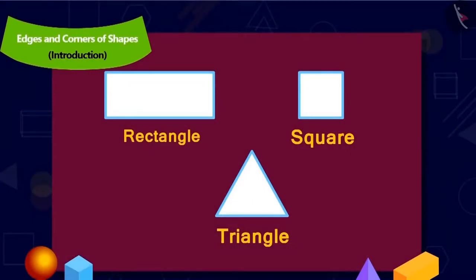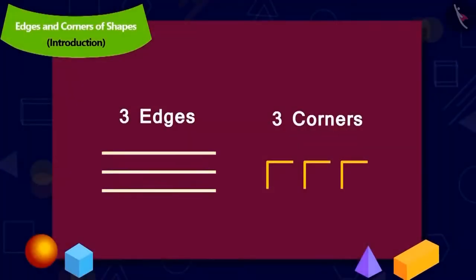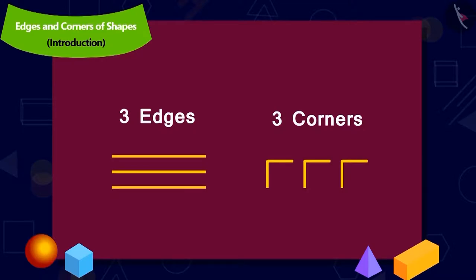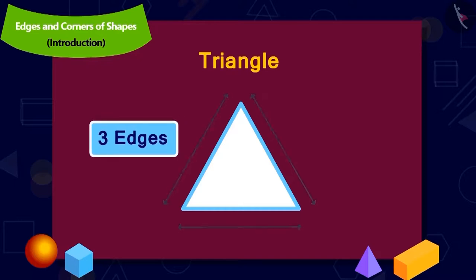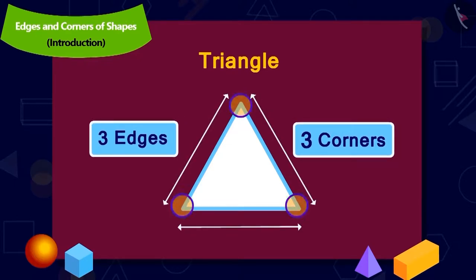Now, Uncle asked Chanda to recognize the objects with three edges and three corners. Do you recognize this shape? Absolutely right! Triangle! Triangle has three edges and three corners.